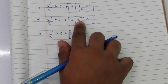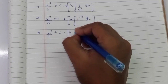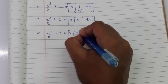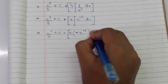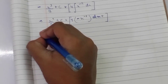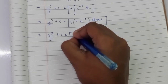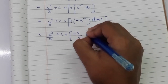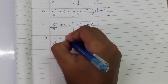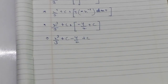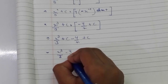For the second integral, adding 1 to the exponent: minus 2 plus 1 gives minus 1, so we get 4 times x to the power minus 1, divided by minus 1, which equals minus 4 over x. Taking both constants of integration together, the final answer is x cubed over 3 minus 4 over x plus c.